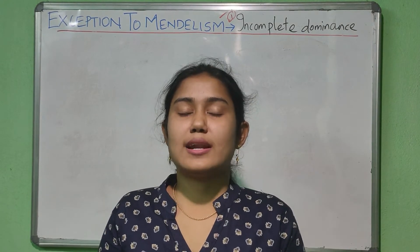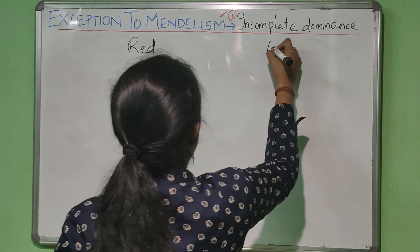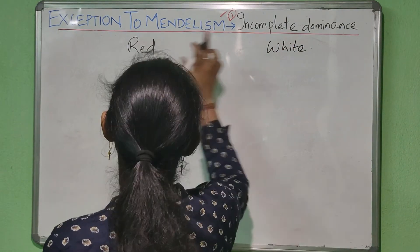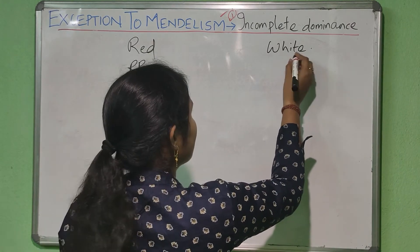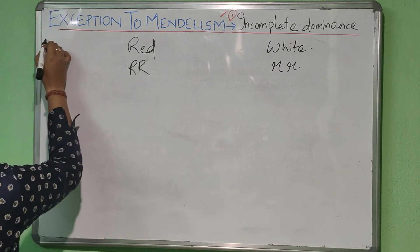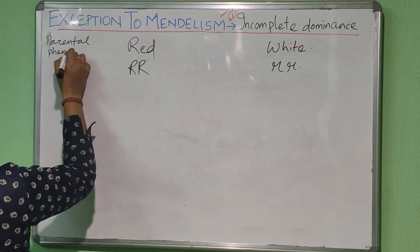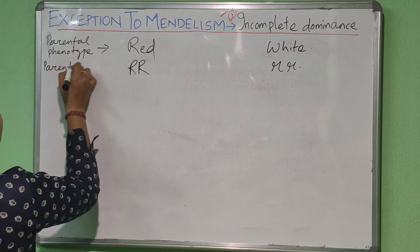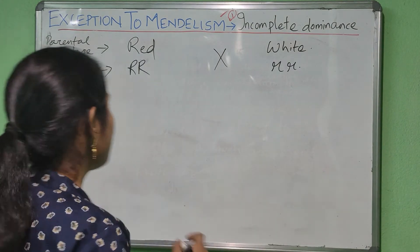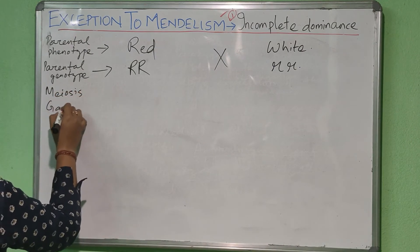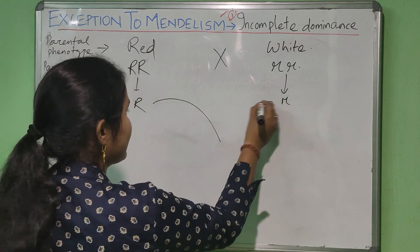In case of Mirabilis jalapa, there are two different types of flower color in the pure state. One is red and the other one is white, and red is dominant over white. For red we will write capital R, capital R as the allele, and for white we will write small r, small r. This will be your P1 parental phenotype and parental genotype. After meiosis we will get the gametes — here we will get capital R and here we will get small r.